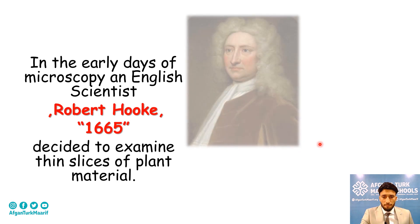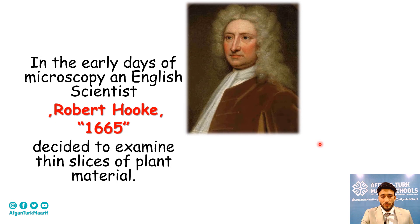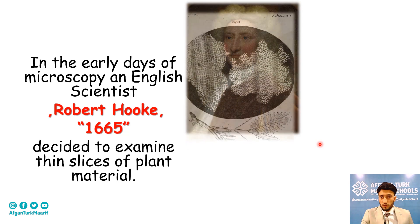For example, when we start at the early days of microscopy, we find that an English scientist, Robert Hooke, in 1665 published a book named Micrographia. In his book, he decided to examine thin sections of plant material. He used cork and was struck by the regular appearance of the structure, and so, without fully realizing it, he established the term 'cell.'